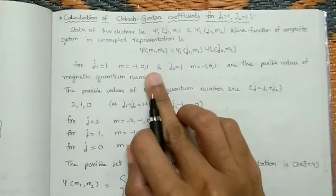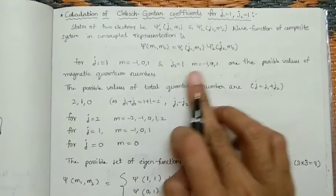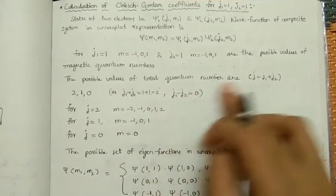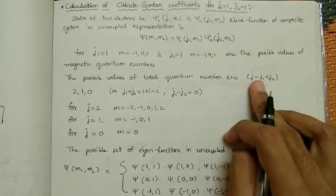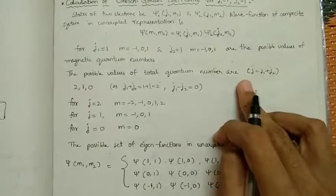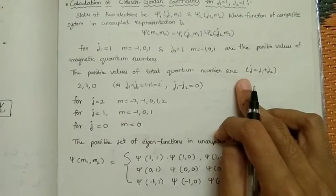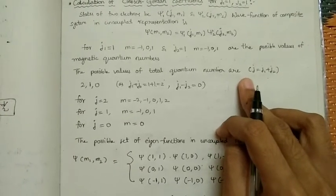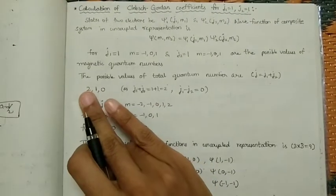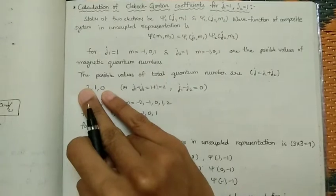For j1 equals 1, the possible m values are -1, 0, 1, and for j2 equals 1, the possible m values are also -1, 0, 1. Since both are equal to 1, the possible total angular momentum ranges from j1+j2 to j1-j2 — that is, from 2 down to 0, with intervals of 1.